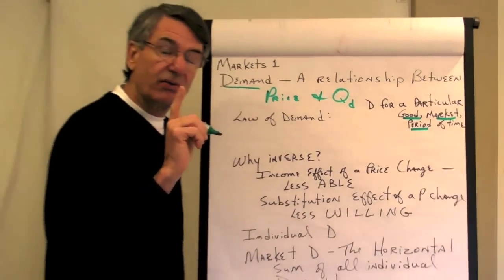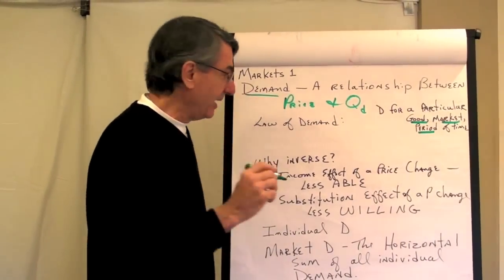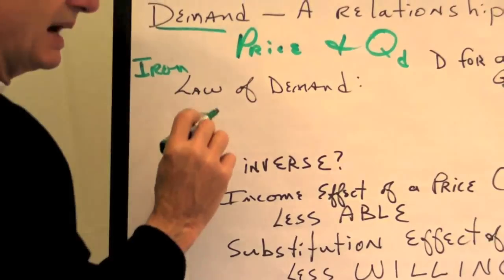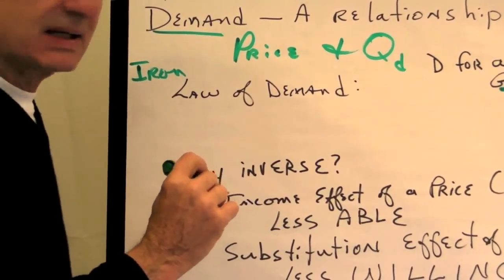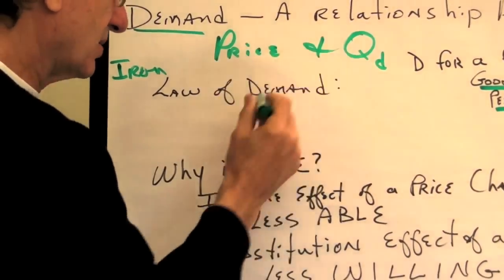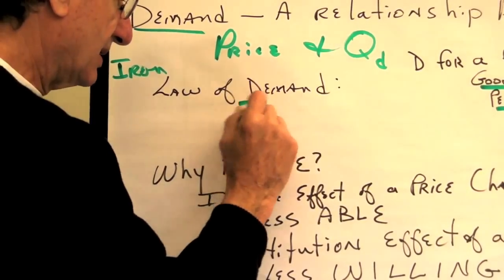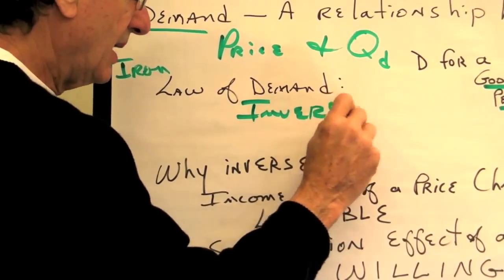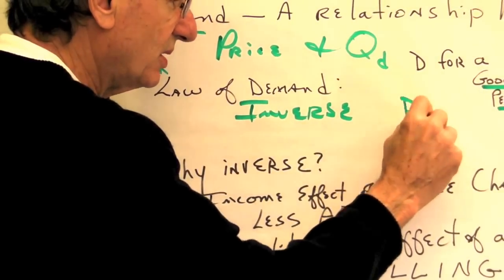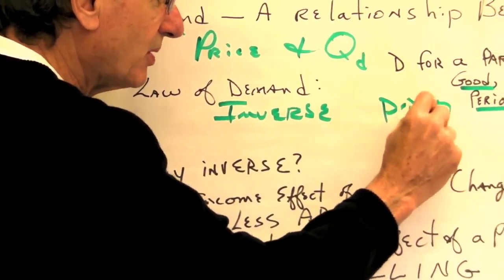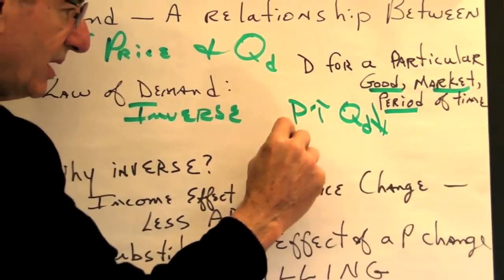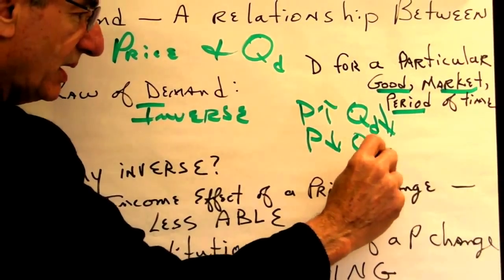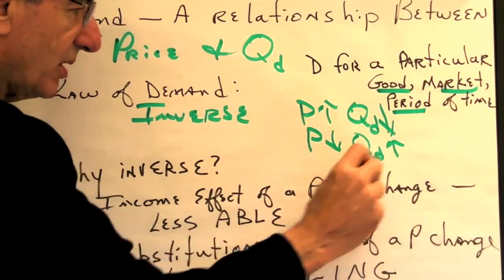There's something called the law of demand, and it's not just a law — it's an iron law. The iron law of demand says that this relationship between price and quantity demanded is inverse. That means that if the price of the good goes up, the quantity demanded will go down, and if the price of the good goes down, the quantity demanded will go up.